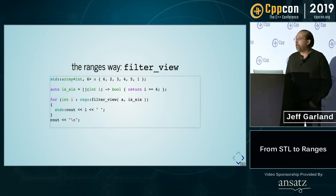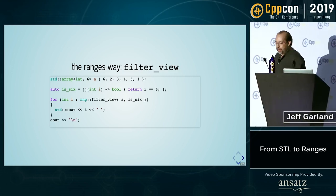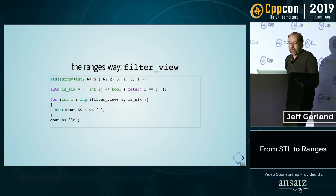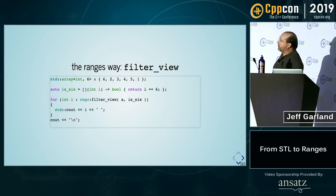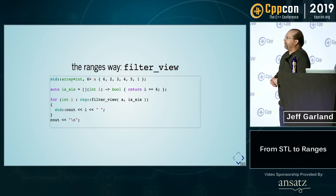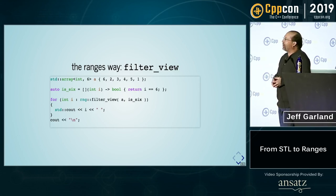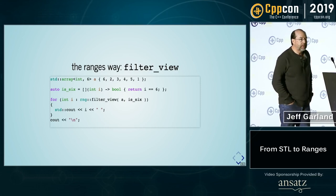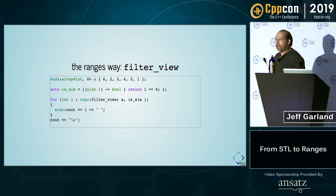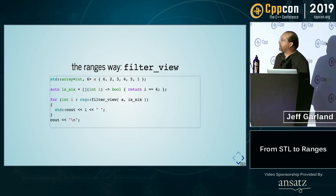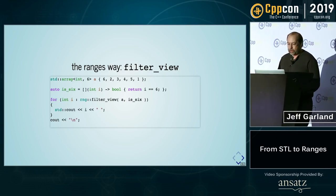There's something that's really much more radical about the range library, and that part of the radical change is views. If you look at this particular code, you'll notice I have my same array, my same predicate, and now I have a for loop. I have a range filter — it takes the range and applies the predicate, and I only drop into the loop when the predicate is actually evaluated to true. There are no iterators. You only get values in the for loop that you know you can access. That's what's very radical about this.